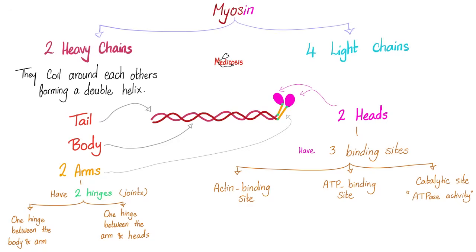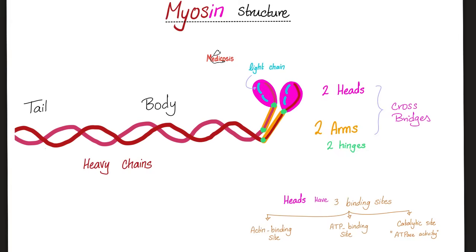Myosin structure: we have two heavy chains and four light chains, a tail, body, two arms, and two heads. The arms and heads make cross bridges that extend from the myosin, grab the actin, get it closer to the midline, and therefore the sarcomere will shorten — hashtag muscle contraction. These beautiful heads have an actin binding site, an ATP binding site, and ATPase activity to break the ATP and release the energy necessary for contraction.